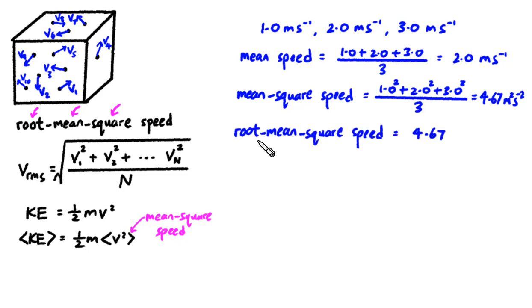To calculate the root mean square speed, we just have to do the final step. We just have to take the square root of the mean square speed, giving us the answer of 2.16 meters per second. So the root mean square speed of these 3 gas particles turns out to be 2.16 meters per second.